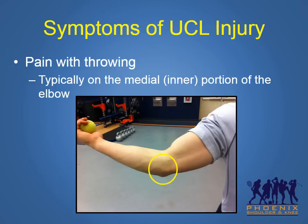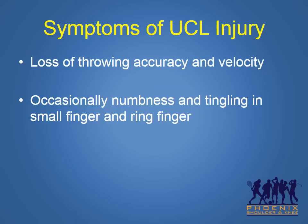Symptoms of ulnar collateral ligament injuries include elbow pain during throwing activities on the inside or medial aspect of the elbow, as shown in the yellow circle in this image. Athletes usually do not experience pain with routine daily activities other than throwing. Throwing athletes also typically report a loss of throwing accuracy, velocity, and overall throwing effectiveness.